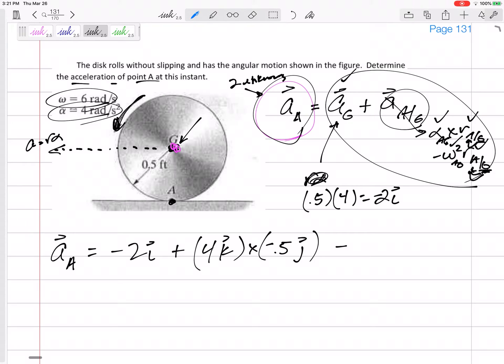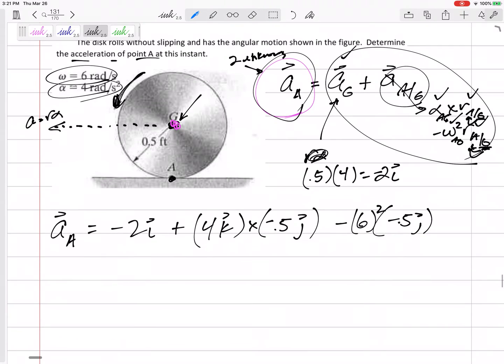All right, and then minus omega squared, 6 squared times negative 0.5 in the J. So there's my equation. The acceleration of A, negative 2I.